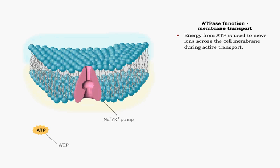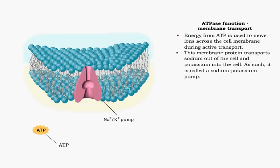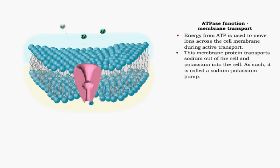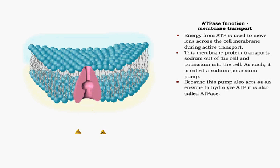ATPase in the cell membrane uses the energy from ATP to move ions against their concentration gradients. This membrane protein transports sodium out of the cell and potassium into the cell. As such, it is called a sodium-potassium pump. Because this pump also acts as an enzyme to hydrolyze ATP, it is also called ATPase.